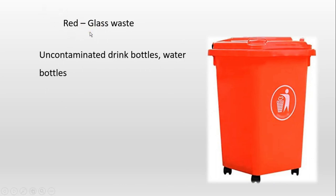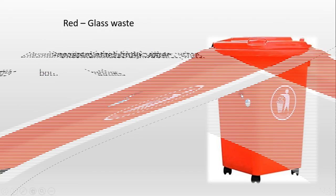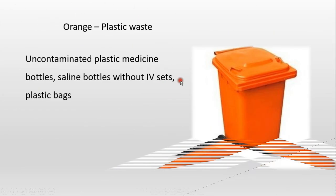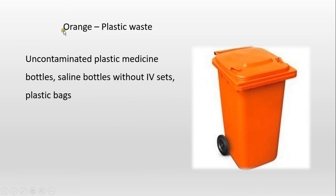Under the red color code, glass waste is managed. Uncontaminated drink bottles and water bottles are considered glass waste and should be discarded into red color bins. Blue color is for paper waste — all paper, cardboards, and office stationery are taken as paper waste and placed into blue bins.